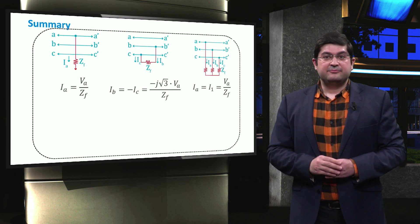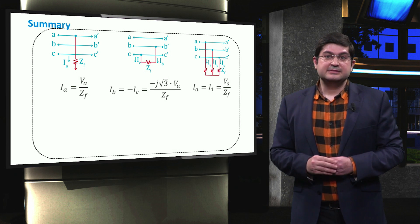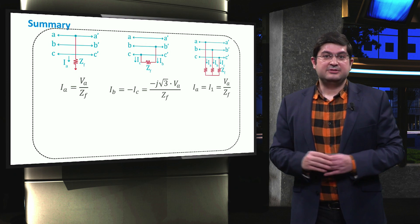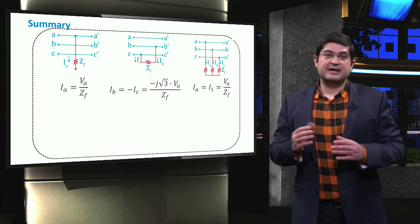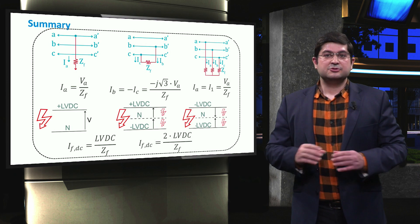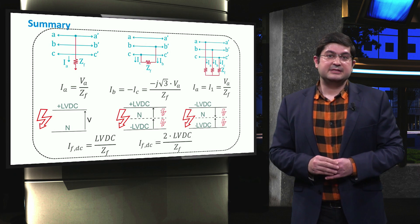In this video, we presented three types of faults in an AC system that are line-to-ground, line-to-line, and three-line faults. We calculated the fault current for these three cases. We also showed two types of faults in DC grids, either pole to ground or pole to pole faults.